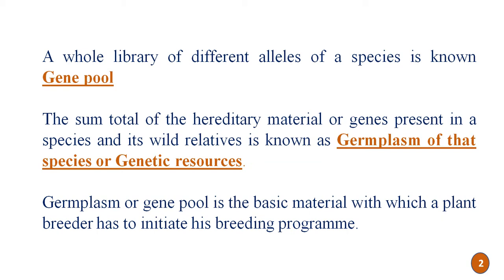The first step of plant breeding is to create variability, then select useful plant material. For creating variability we need a large number of genotypes, and these plant genetic resources play an important role in creating the variability that exists in nature. These are the important resources for a breeder.